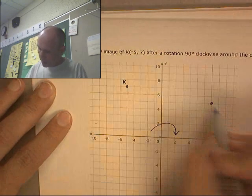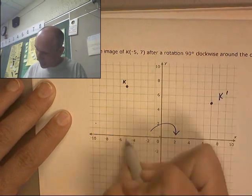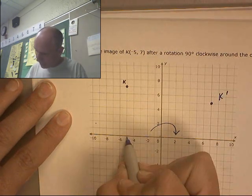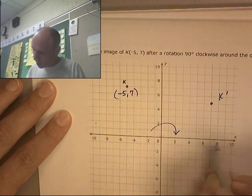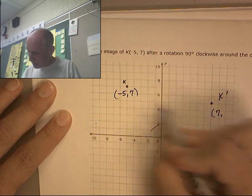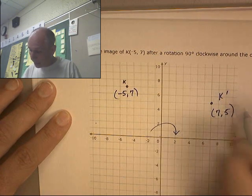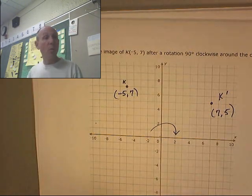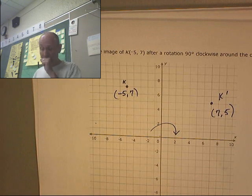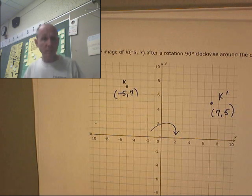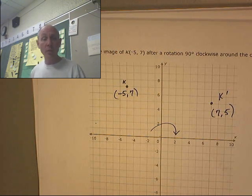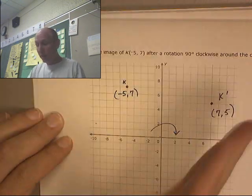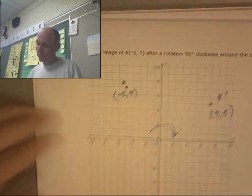And where is that? Well, the original K was at negative 5, 7. And the new K is at 7, 5. So once again, you're seeing a connection between the numbers. But I don't want you to just do this based on some kind of a rule. I want you to really try to figure out how in your mind to rotate these through different degrees.